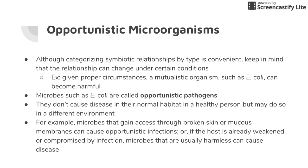When opportunistic pathogens are in their normal habitat, they're fine — they do us no harm. But put them in a different environment and it causes problems. E. coli is supposed to live in the gut and helps us break down stuff. But if it gets into the urinary tract, then it becomes a urinary tract infection. If it gets into the lungs, spinal cord, or wounds, that's going to cause all kinds of different infections, because E. coli is no longer in its home — it's somewhere else within our body.